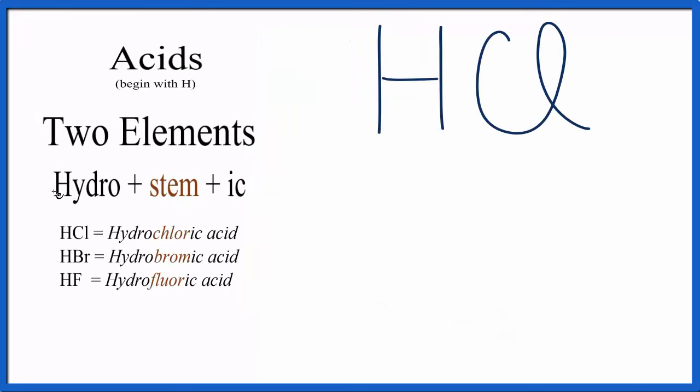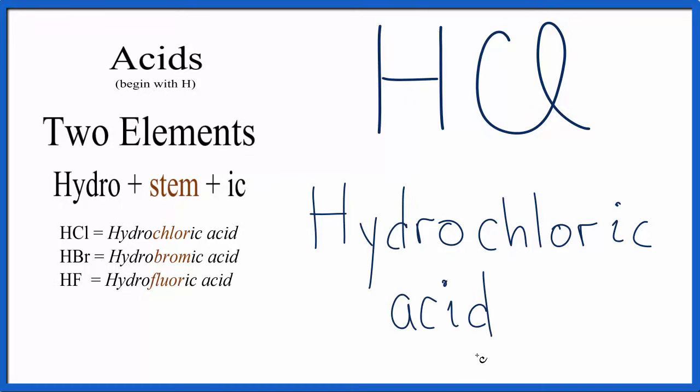We start by writing the prefix hydro. Then we take the stem. So we'll take the element chlorine, and we'll take the INE off, and that'll leave us with our stem, C-H-L-O-R, and then we add IC. We write acid, and we're done. That's the name for HCl, hydrochloric acid.